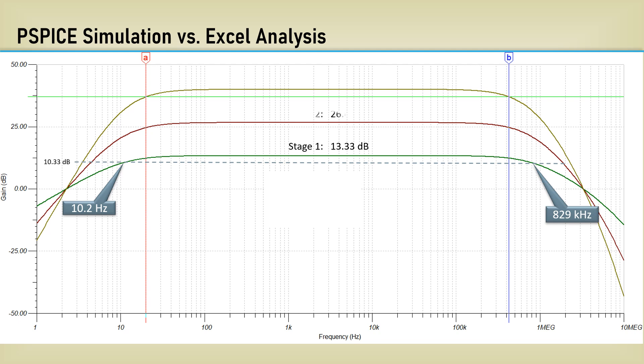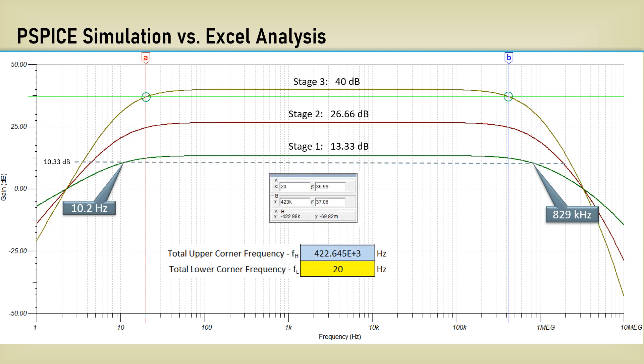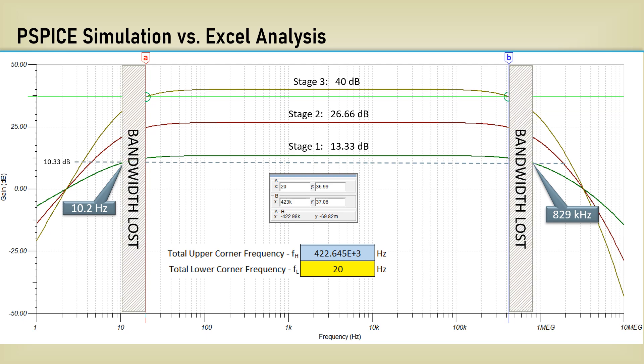The total output, with a gain of 40 dB, has markers at its 3 dB corners. And here are the marker values, along with the spreadsheet results. These rectangles show the bandwidth lost. There is a very good correlation between the calculated values and the simulation results.